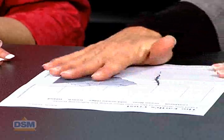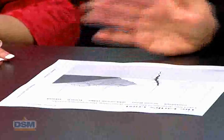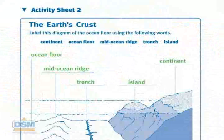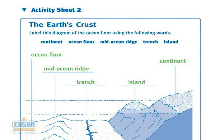We also want students to look at the features above the water level — a continent and an island — and label those on the worksheet. We then want to turn this two-dimensional illustration into a three-dimensional model. Before building, students should think about what features to include: continent, ocean floor, mid-ocean ridge, trench, and islands.